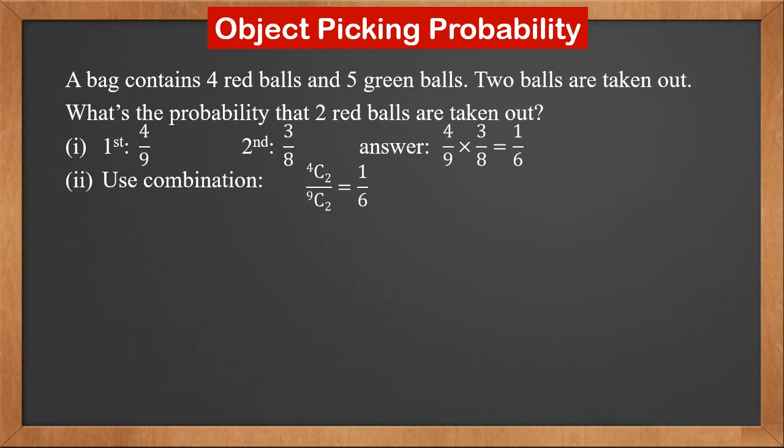We can also use combination to solve this problem. There are four red balls; if we take out two, that is 4C2. The total number of ways of taking two balls out of nine balls is 9C2. So the answer is 4C2 over 9C2, which is also one over six. For object picking probability, we can either multiply the probability of each ball, or use combination.